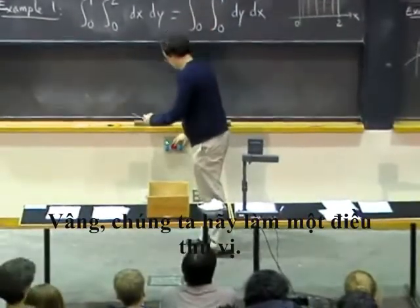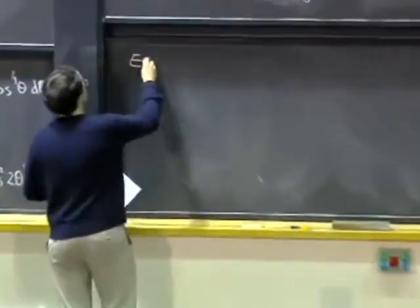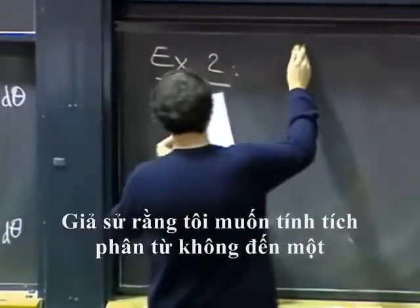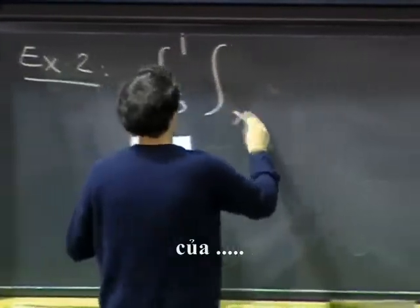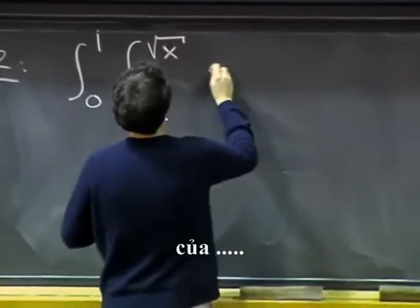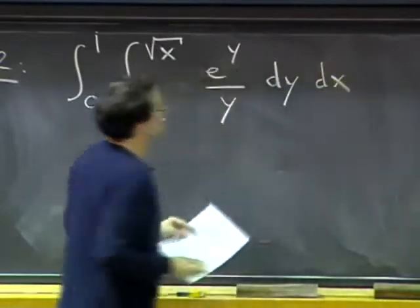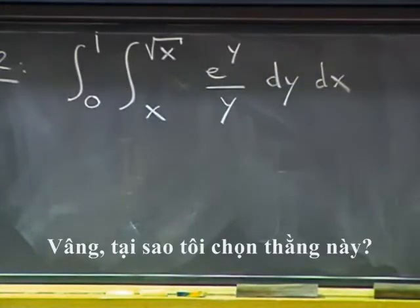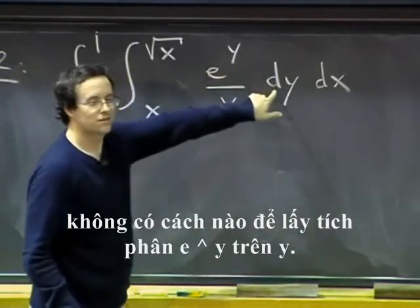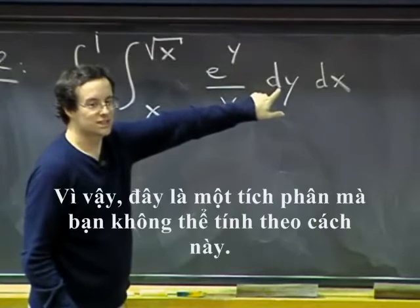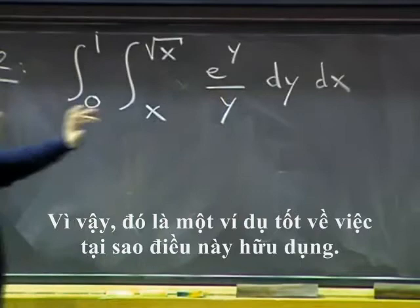OK, so let's do a more interesting one. Let's say that I want to compute integral from zero to one of integral from x to square root of x of e to the y over y dy dx. So why did I choose this guy? I chose this guy because, as far as I can tell, there is no way to integrate e to the y over y.